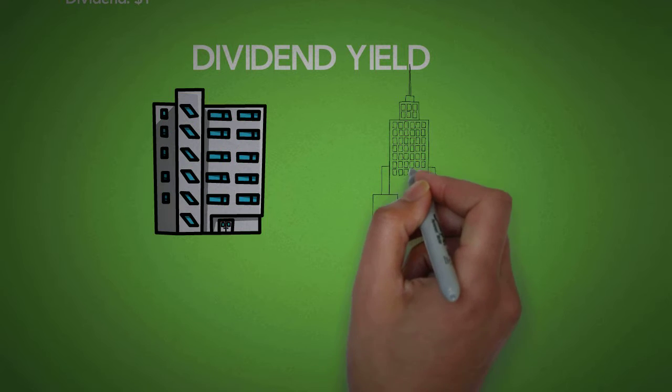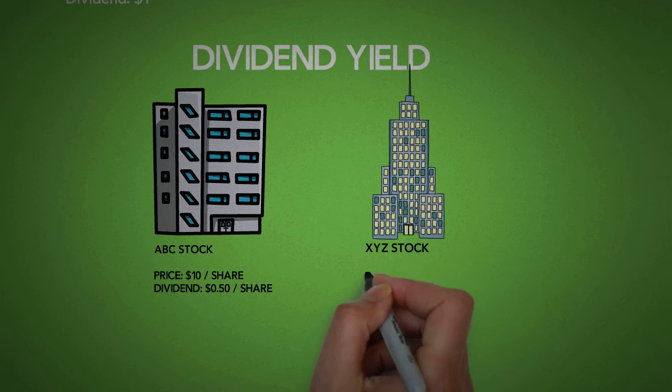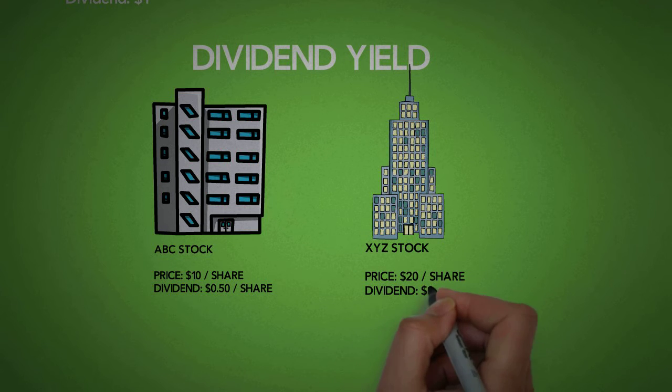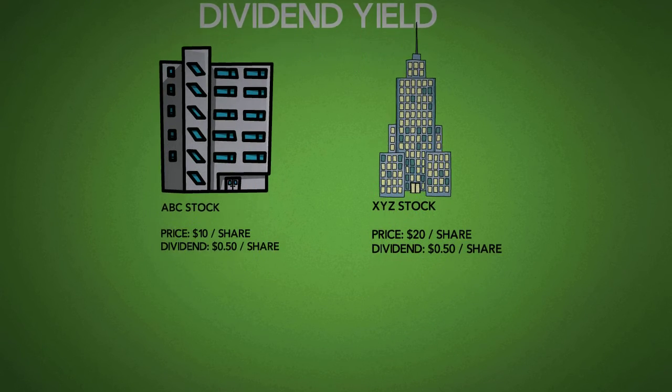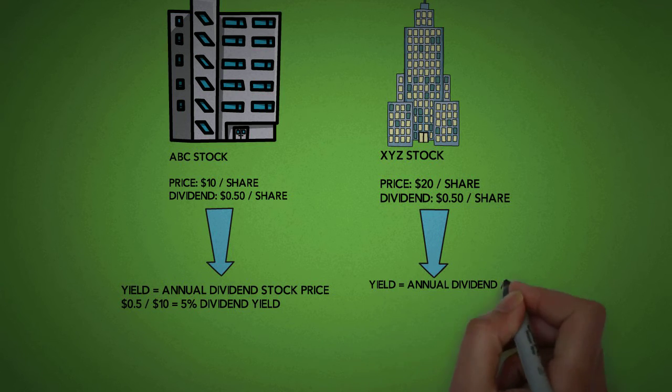Let's say company ABC stock is trading at $10 and it pays a yearly dividend of $0.50 per share to its shareholders. Also, suppose that company XYZ stock is trading at $20 and pays $0.50 per share as well. Company ABC's dividend yield is 5%, while XYZ's dividend yield is only 2.5%.